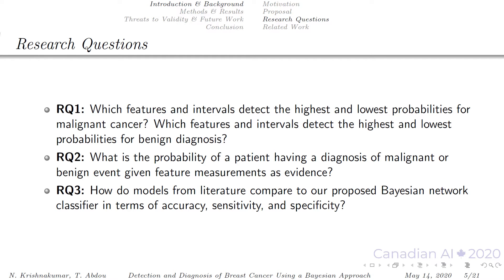On this slide we have our research questions. First, which features and intervals detect the highest and lowest probabilities for malignant cancer? Which features and intervals detect the highest and lowest probabilities for benign diagnosis? Second, what is the probability of a patient having a malignant or benign event given feature measurement as evidence? And third, how do models from literature compare to our proposed Bayesian patient network classifier in terms of accuracy, sensitivity and specificity?